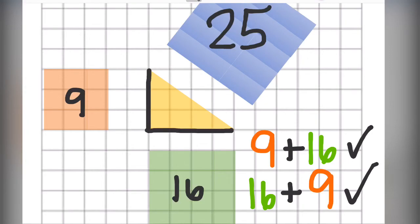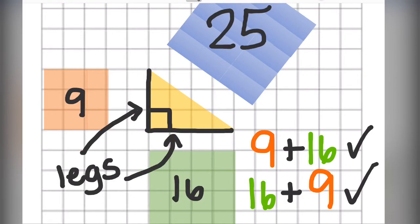The reason this happens is because the two sides that form the right angle, remember those perpendicular lines? They are called the legs of the triangle. That gives us that nine plus 16 or the 16 plus nine.